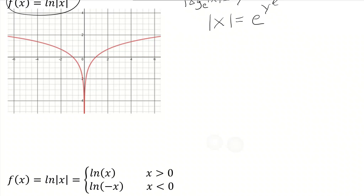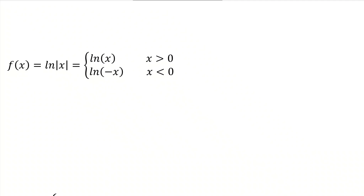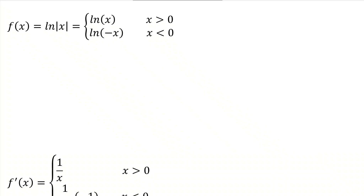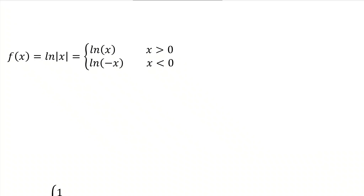Since an absolute value exists in this function, I can re-express it as a piecewise function. So ln absolute value of X can be written as ln of X for X greater than 0, and it can be written as ln of negative X for X less than 0. And now when we differentiate — because of course we are interested in actually finding the derivative — when I take the derivative of a piecewise function, I need to do so for each branch separately.